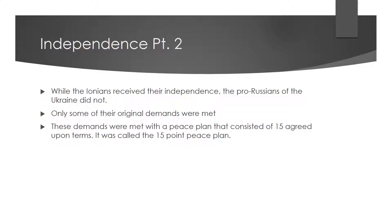The Ionians didn't receive their independence because the Persians defeated them in a battle at Miletus, meaning the Persians still controlled the land the Ionians fought so hard to take back. This contrasts with what happened in Ukraine, where President Petro Poroshenko issued a 15-point peace plan that gave the Russians an opportunity to see that some of their demands were met. Independence gives a country or group of people the opportunity to be who they are. Both the Ionians and the pro-Russians sought independence because they didn't agree with those governing them.